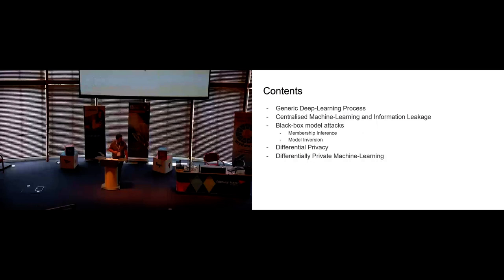Roughly what we want to cover today is the basic generic deep learning process at the most high level possible, because it's important for making sense of some of the things that come later on. We're going to cover basically the architecture of a centralized machine learning model and where the data can leak out from that. We're then going to look at black box model attacks and challenge some of our notions of what is a secure architecture, and look at differential privacy and how we can use differential privacy to fix some of these problems.